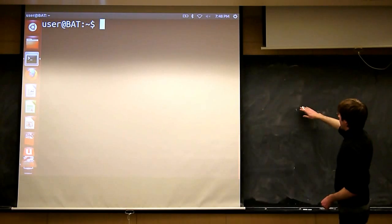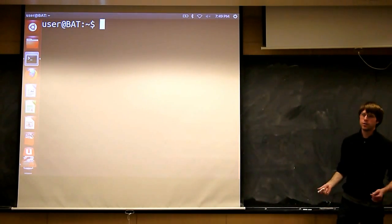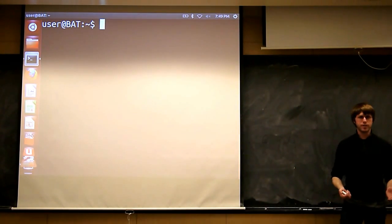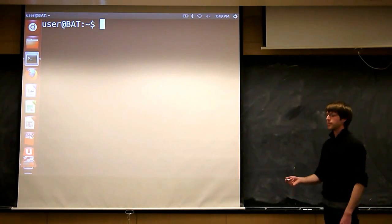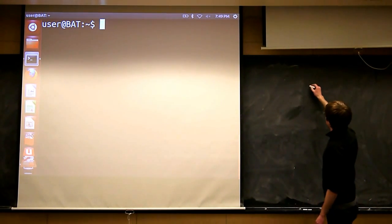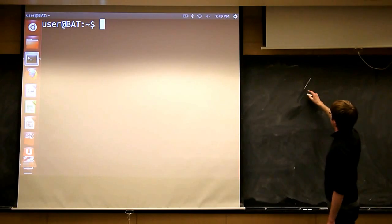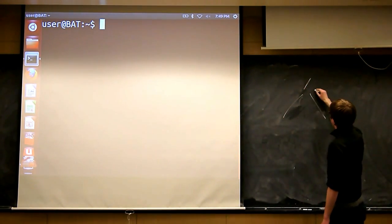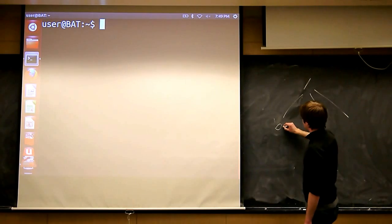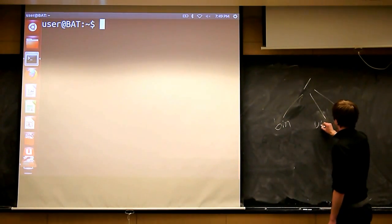The first thing we'll look at is how these files are organized. Most operating systems have some notion of this, but files in Linux are organized in a tree. In Linux we have what we call the root, represented by a slash. Underneath that you have a whole bunch of folders - these are things like bin, user.